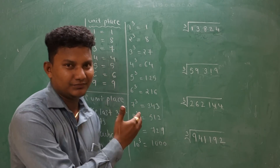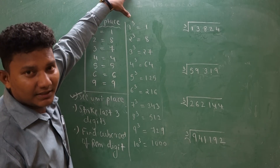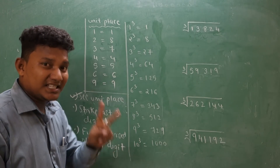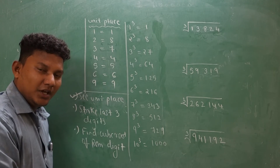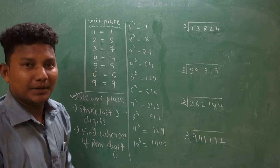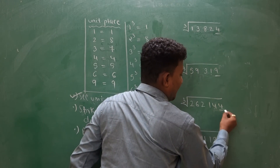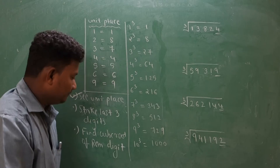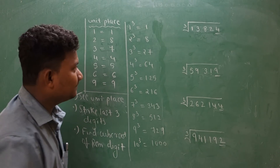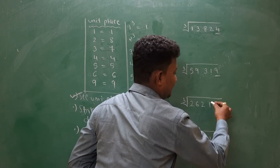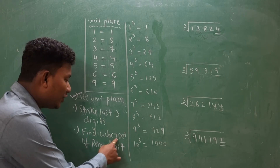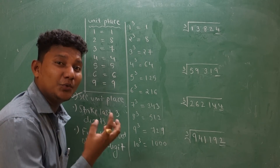So what are the rules and regulations? Step number 1: you have to memorize the cubes from 1 to 10. Step number 2, focus on this rule — see the unit place. You have to see the unit place of the given number. Step number 2: strike out the last 3 digits. Step number 3: find the cube root of the remaining digit.